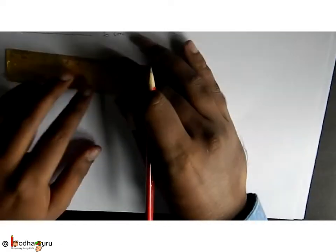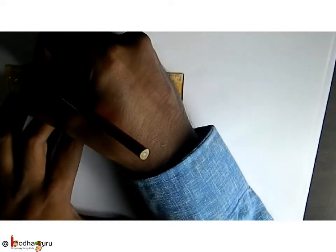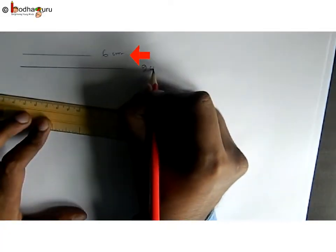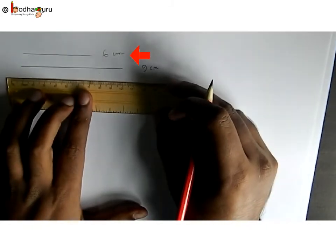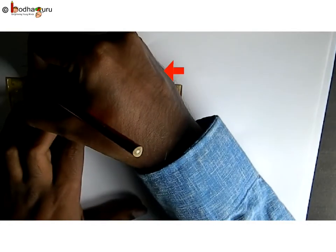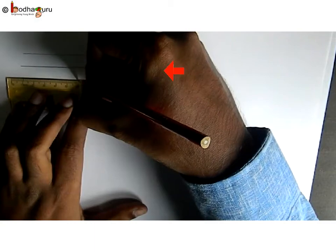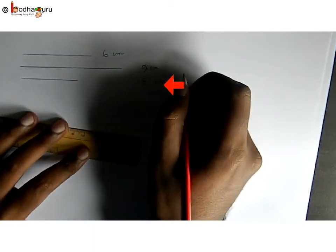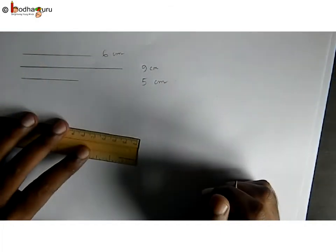We draw the line segments required for the drawing at one corner of paper for reference. Here is AB equal to 6 cm, BC equal to 9 cm, CD equal to 5 cm. So these are the reference lines.